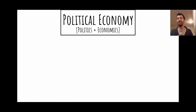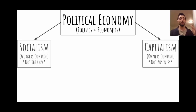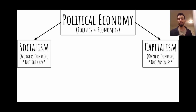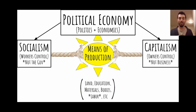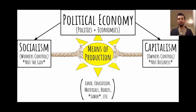Moving into something that is almost never brought up in any U.S. Government and Politics 101 class is what we call political economy. Political economy is just the combination of politics and economics. There are two primary forms: socialism on the left and capitalism on the right. It's not about government versus business — that's a different tension altogether. The tension between socialism and capitalism is just who is in control. You have workers in control under socialism and owners in control under capitalism. They are in a tug of war over control of the means of production, which include land, education, raw materials, factories, bodies, and intellectual property.